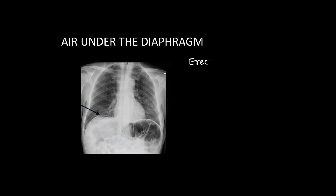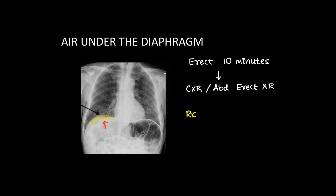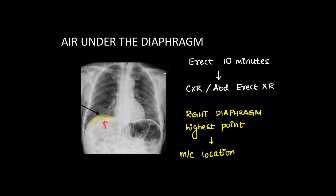The first and classic sign is air under the diaphragm. The patient has to be kept erect for up to 10 minutes so that the air rises up in the abdomen, and then a chest x-ray or abdomen erect x-ray can be taken. Here we can see air collected under the right hemidiaphragm, since it is the highest point in the abdomen. This is the most common location of free air and should not be missed even if only a chest x-ray is done.